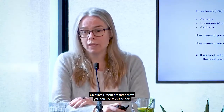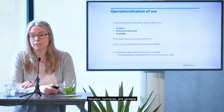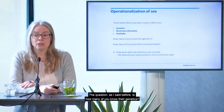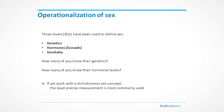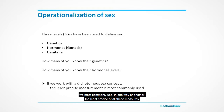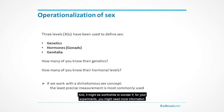Overall, there are three ways to define sex: genetics, hormones, and genitalia. How many of us really know our genetics, or our hormonal levels at any given state, given that they change over time? When we work with a dichotomous concept of sex in biomedicine, we most commonly use the least precise of all these measures. It might be worthwhile to wonder if, for your experiments, you might need some more information than that.